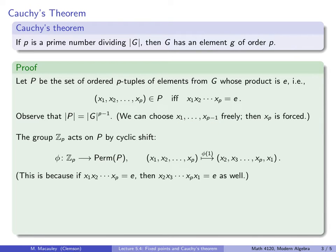Now the group ℤₚ, the cyclic group, acts on our set by cyclic shift. That means we have a homomorphism from ℤₚ to the permutations of P, and we're going to define it as follows. So we take a p-tuple, x₁ up to xₚ, and when we apply the permutation φ of one, in other words when we press the one button, that's going to take this tuple and take this first element, this first entry, and stick it at the end. So we get this tuple.